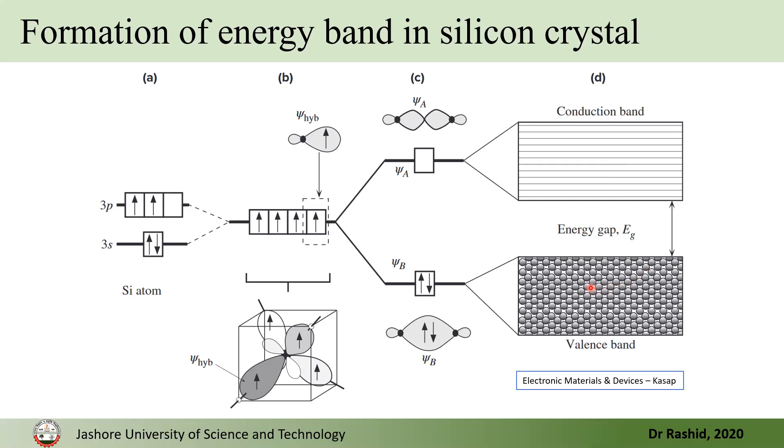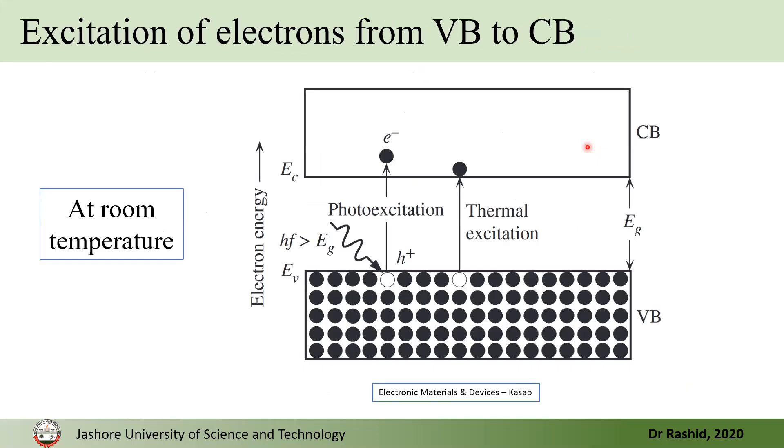Now, this is, of course, at 0 Kelvin temperature that all electrons are sitting in the valence band and the conduction band is completely empty. But, at room temperature, because of heat and also because of light, electrons may excite from valence band to conduction band, creating a void or hole in the valence band.